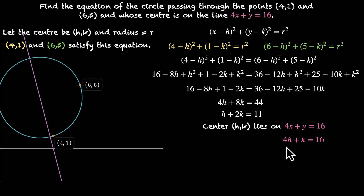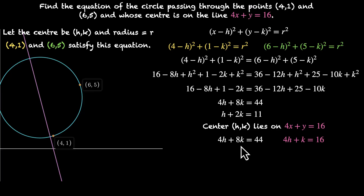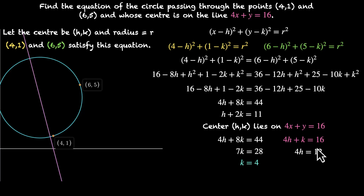We have 4h plus k equals 16 and h plus 2k equals 11. Multiplying the second equation by 4 gives 4h plus 8k equals 44. Subtracting the first from this, we get 7k equals 28, which means k equals 4. Plugging k equals 4 back in gives 4h equals 12, so h equals 3. Therefore h is 3, k is 4, and our center is 3 comma 4.